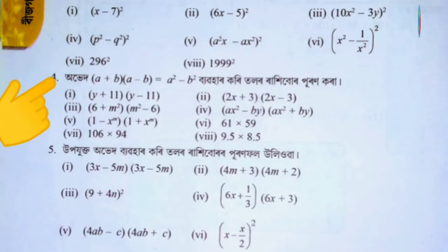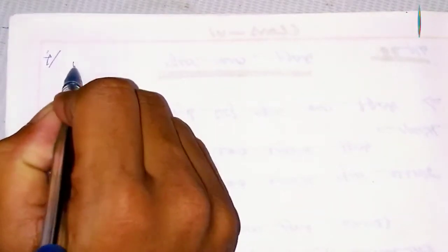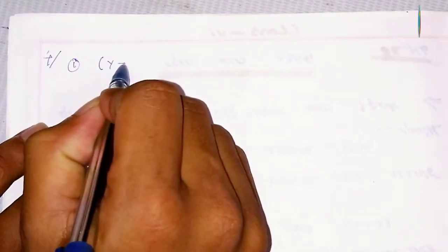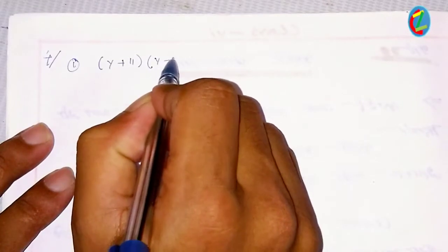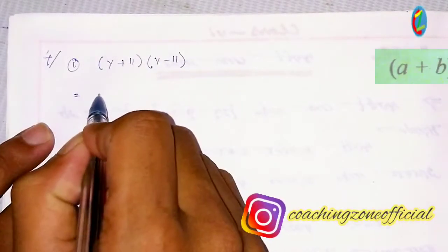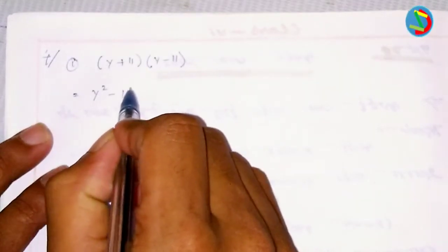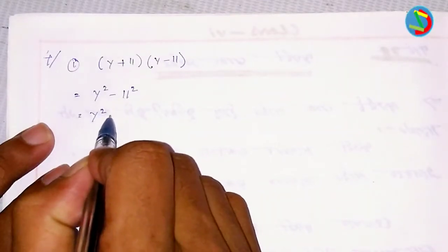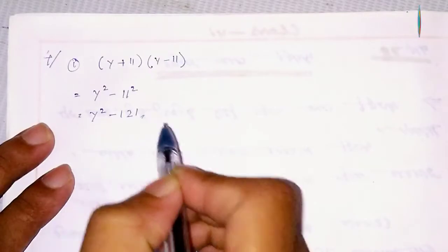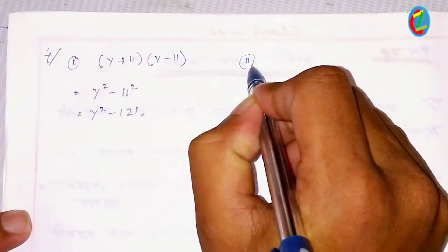If you read the following, first of all, the answer is (y+11)(y-11). This equals y squared minus 11 squared, which gives us y squared minus 121. That's the answer for the first problem.